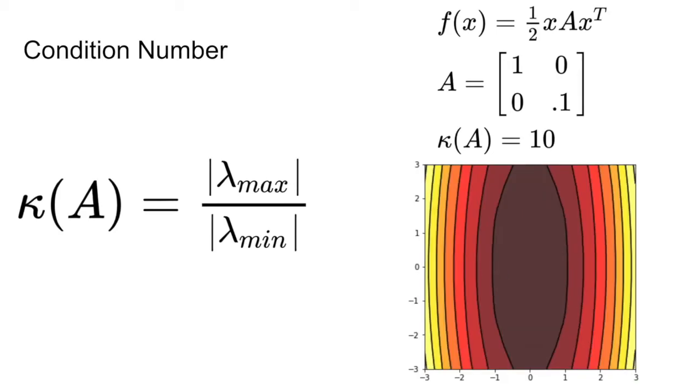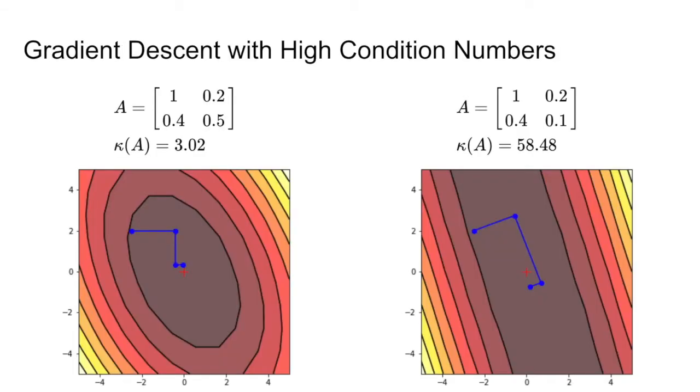When we look at a matrix with a larger condition number, we can see that the isocontours are stretched along one eigenvector significantly more than the other, creating this oblong shape in its isocontour graph. How does this relate to gradient descent?